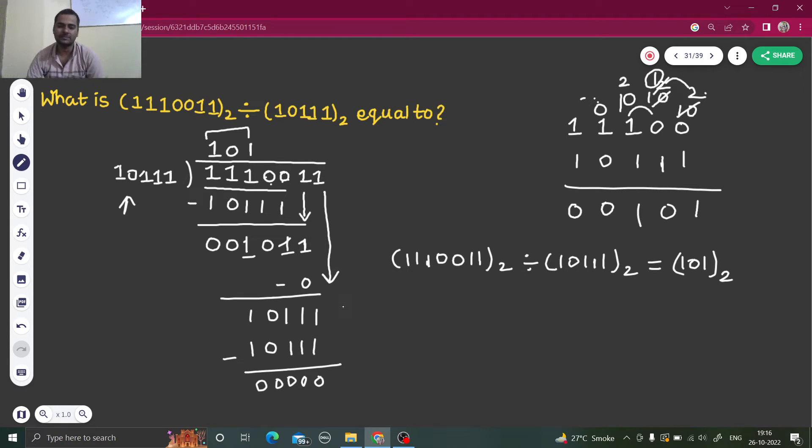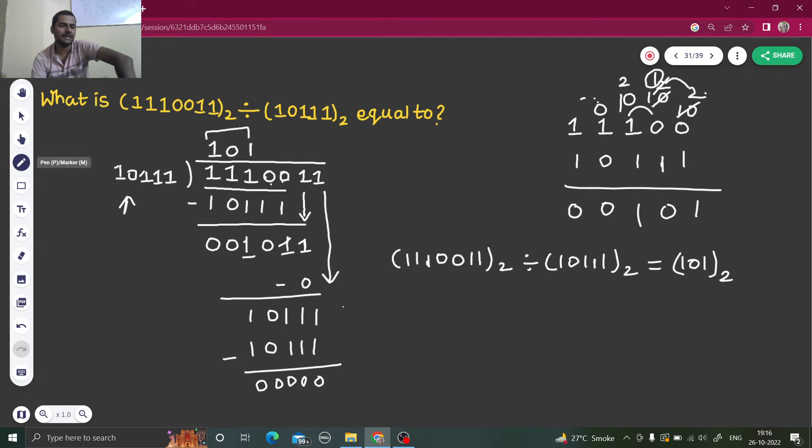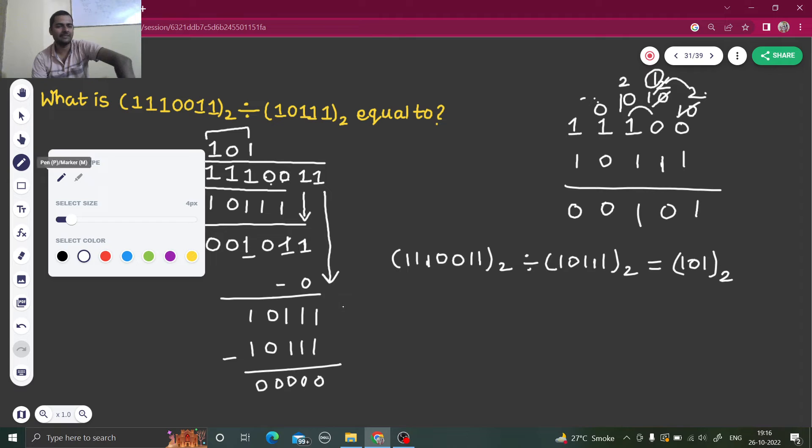As you can see each of them are in base 2. So this was a one-step process, only just the division. Let's solve the same question by converting them to decimal that will also check our solution whether I have done correct or not.